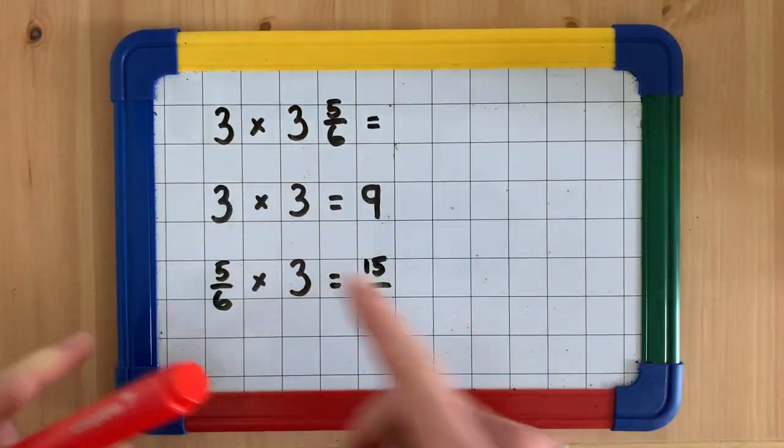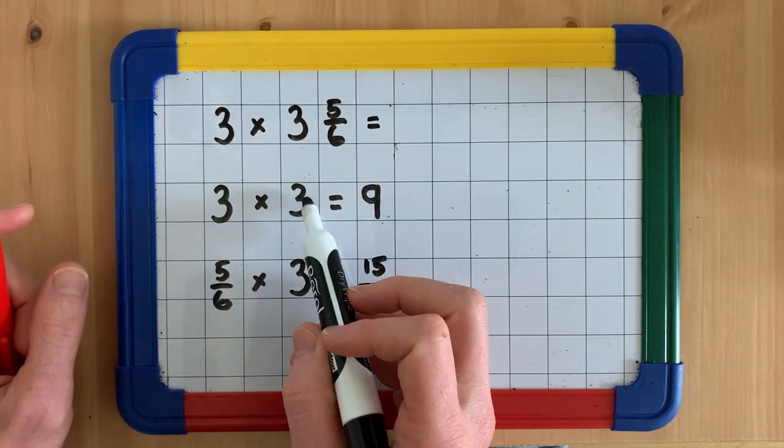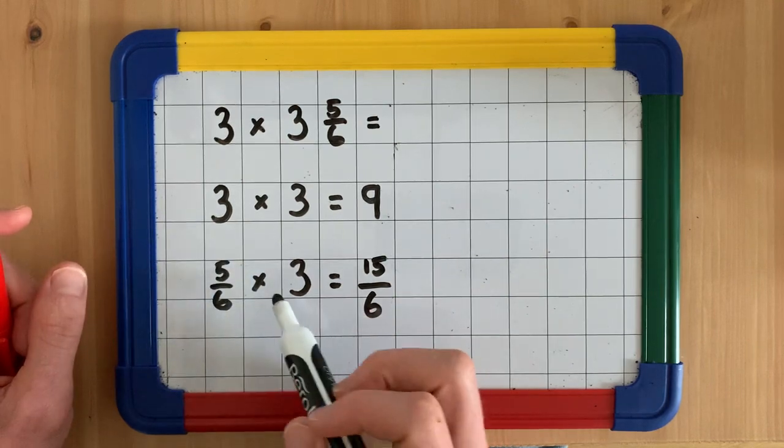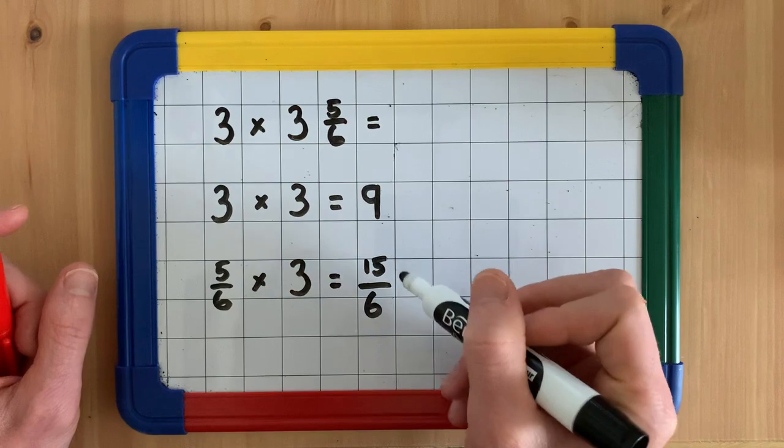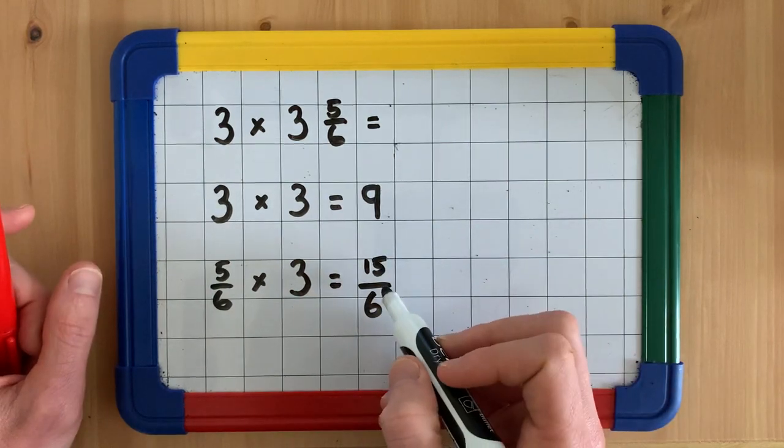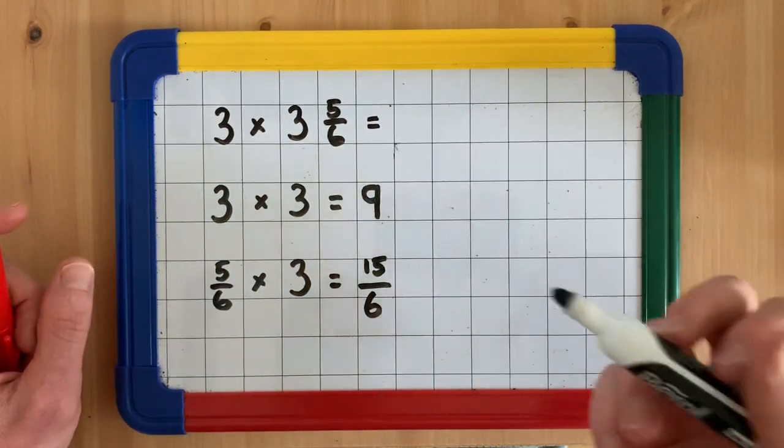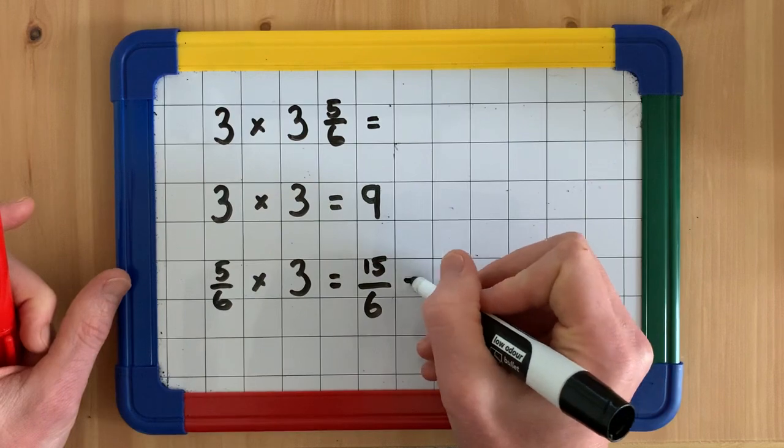So now we've multiplied our integer by the integer we're multiplying by and we've multiplied our fraction by the integer. We can look at seeing whether we can turn this fraction into a mixed number if we've got an improper fraction. And if we haven't, we've got to start looking at whether we can simplify the fraction.